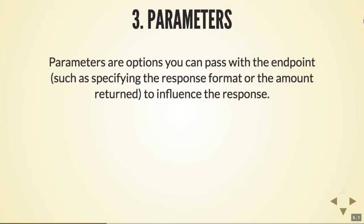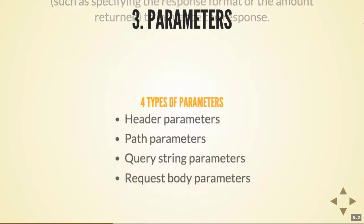The next section is parameters. Parameters are the options you can pass with the endpoint, such as specifying the response format or the amount returned, in order to influence the response. When you did the Open Weather Map sample request, we passed in the zip as a parameter, the app ID as a parameter, and the units as a parameter. This is probably one of the most important sections because developers constantly refer to it to know the data type, parameter names, casing, and minimum and maximum values.